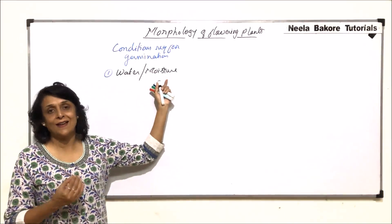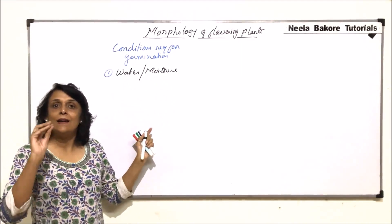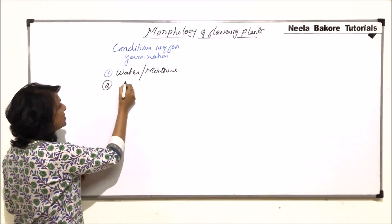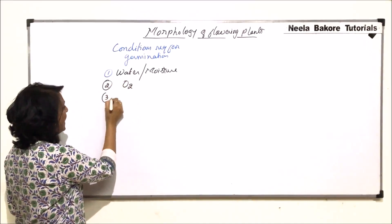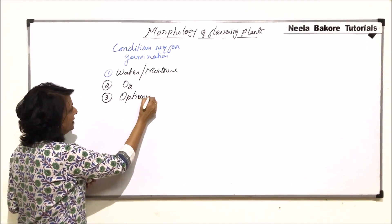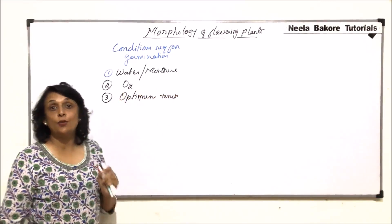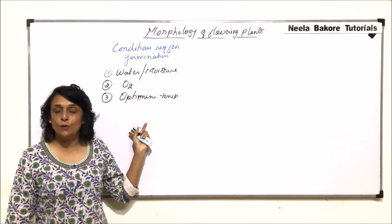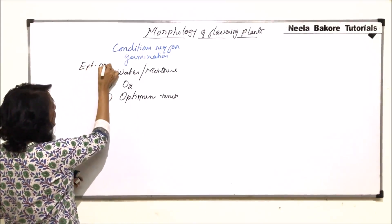That means seeds require water in the form of moisture. If there is too much water, the seeds would not germinate. So moisture is the correct term, but basically moisture means water — only a little amount of water is required. The second condition is oxygen, which is required for aerobic respiration. And the third is optimum temperature. These are the three external conditions required for germination.